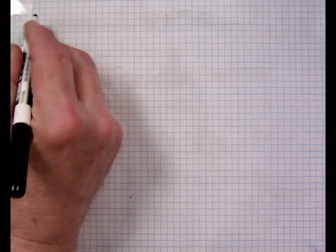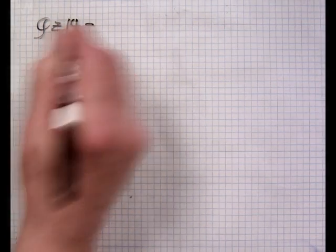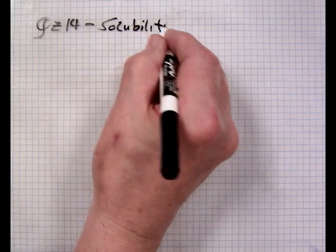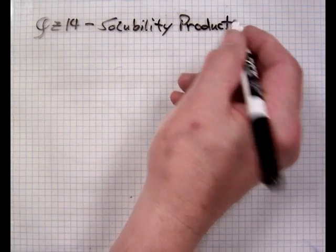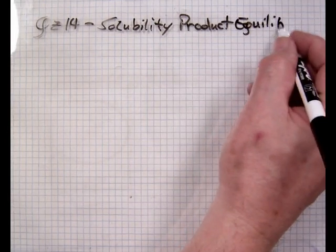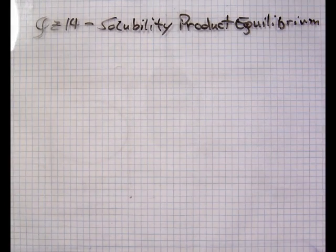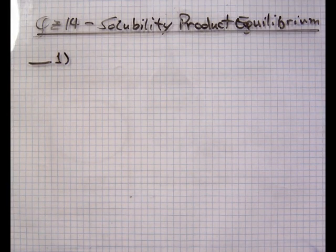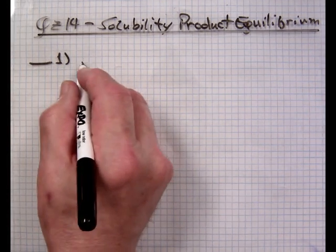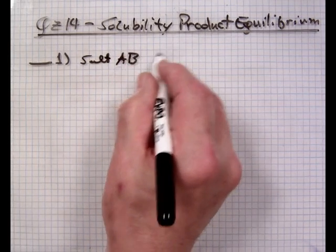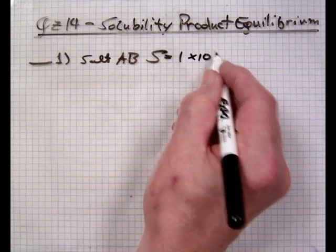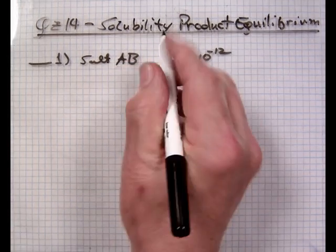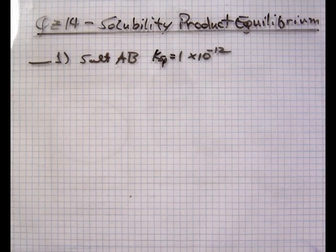Quiz 14, this is a solubility product equilibrium. Number 1, salt AB has a Ksp of 1 times 10 to the minus 12, and a Ksp of 1 times 10 to the minus 12.